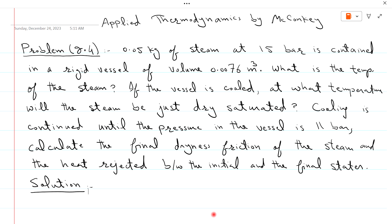Problem 2.4: 0.05 kg of steam at 15 bar is contained in a rigid vessel. Rigid vessel means volume is constant — there is no change in volume and work done is considered to be 0. The constant volume is 0.0076 cubic meters. What is the temperature of the steam? If the vessel is cooled, at what temperature will the steam be just dry saturated? Cooling is continued until the pressure in the vessel is 11 bar — that is the final pressure. Calculate the final dryness fraction X and the heat rejected between the initial and final state.